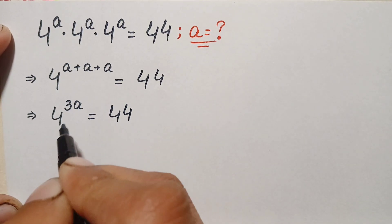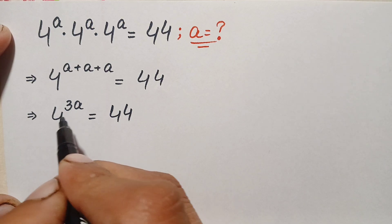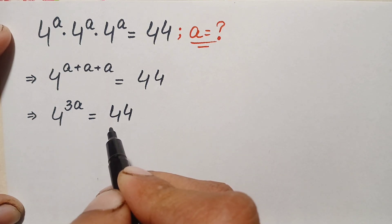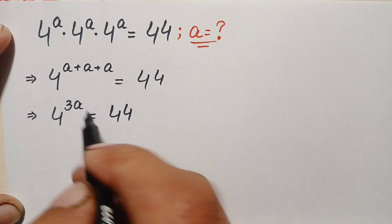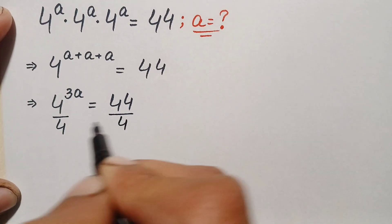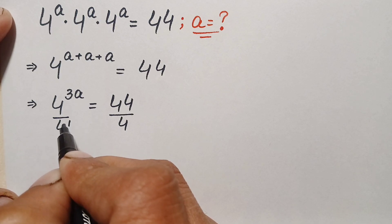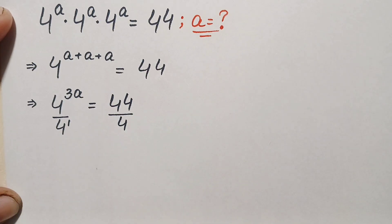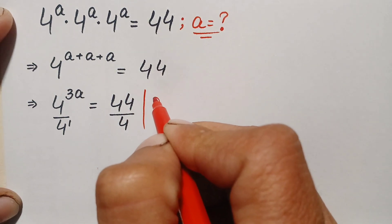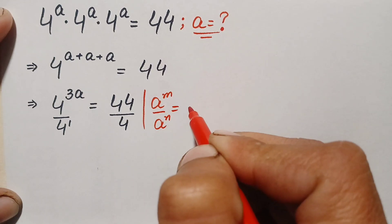There are two possibilities to find the value of a: one is to take the common log on both sides, and the other is — since 4 and 44 are both divisible by 4 — to divide both sides by 4. We will use the exponential identity: a raised to power m divided by a raised to power n equals a raised to power m minus n.